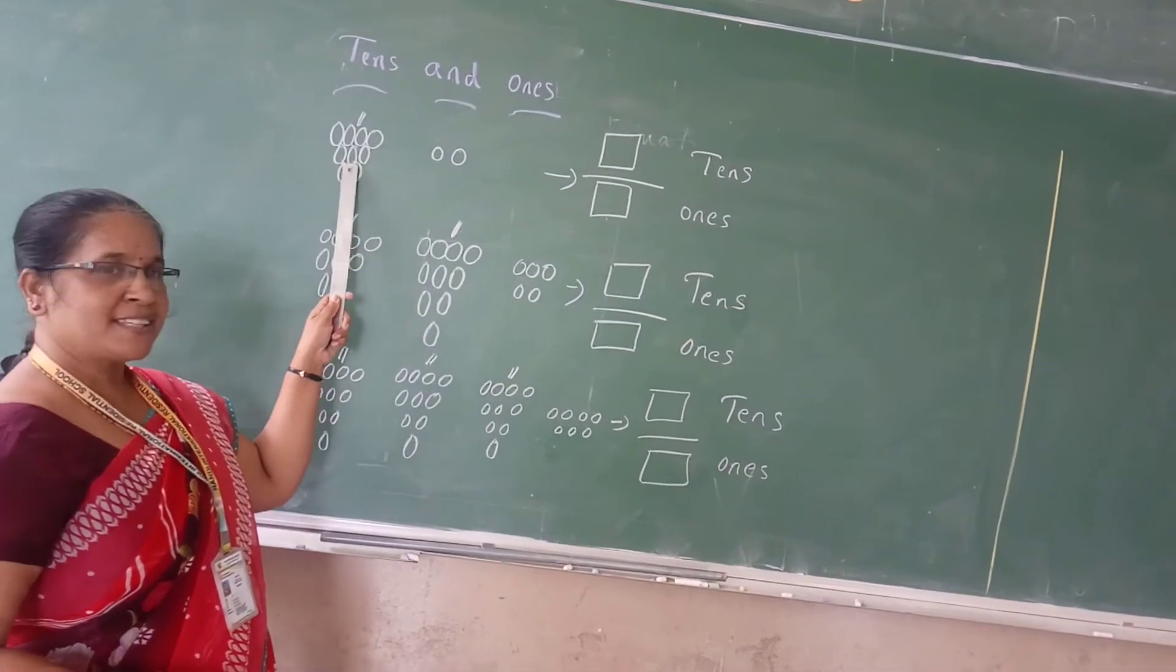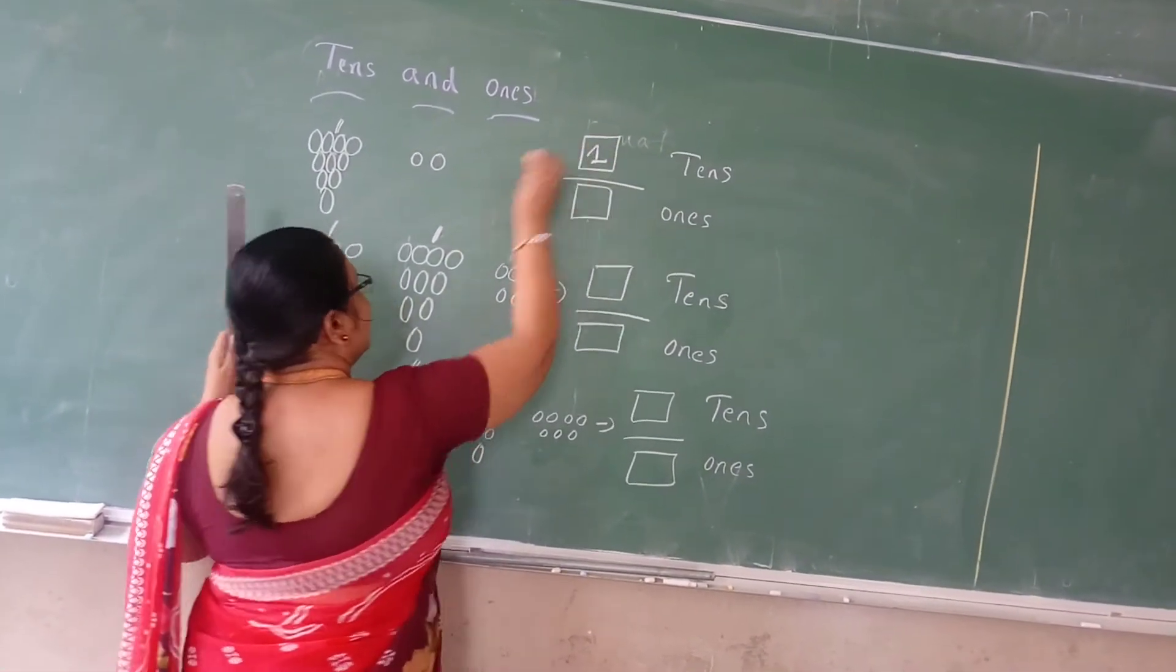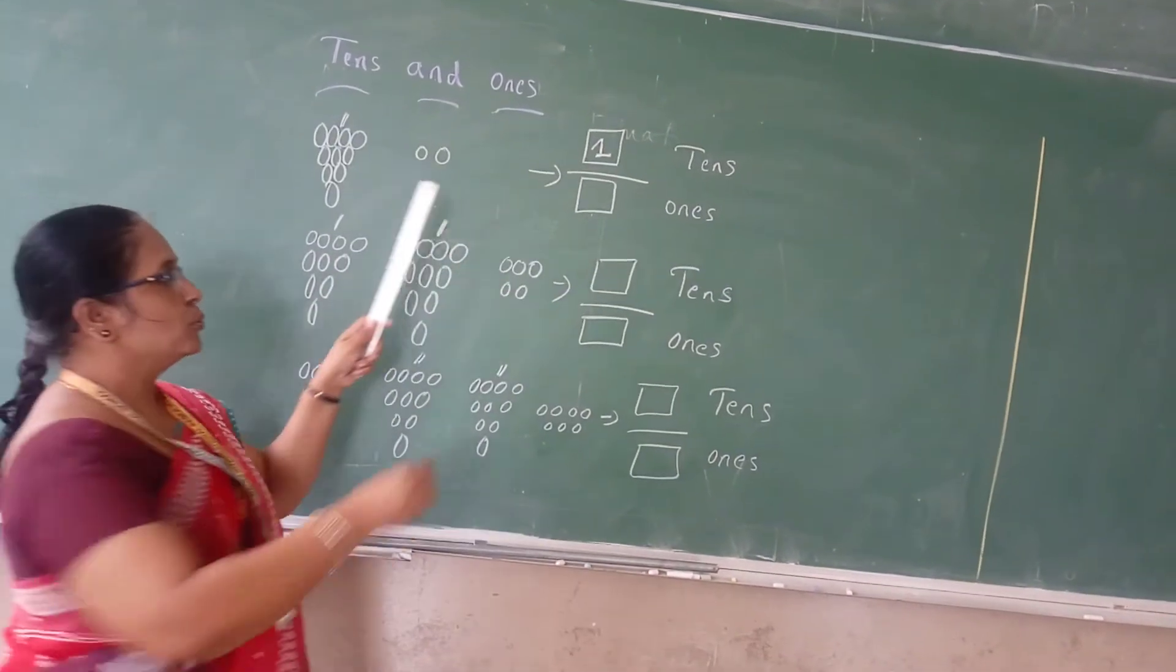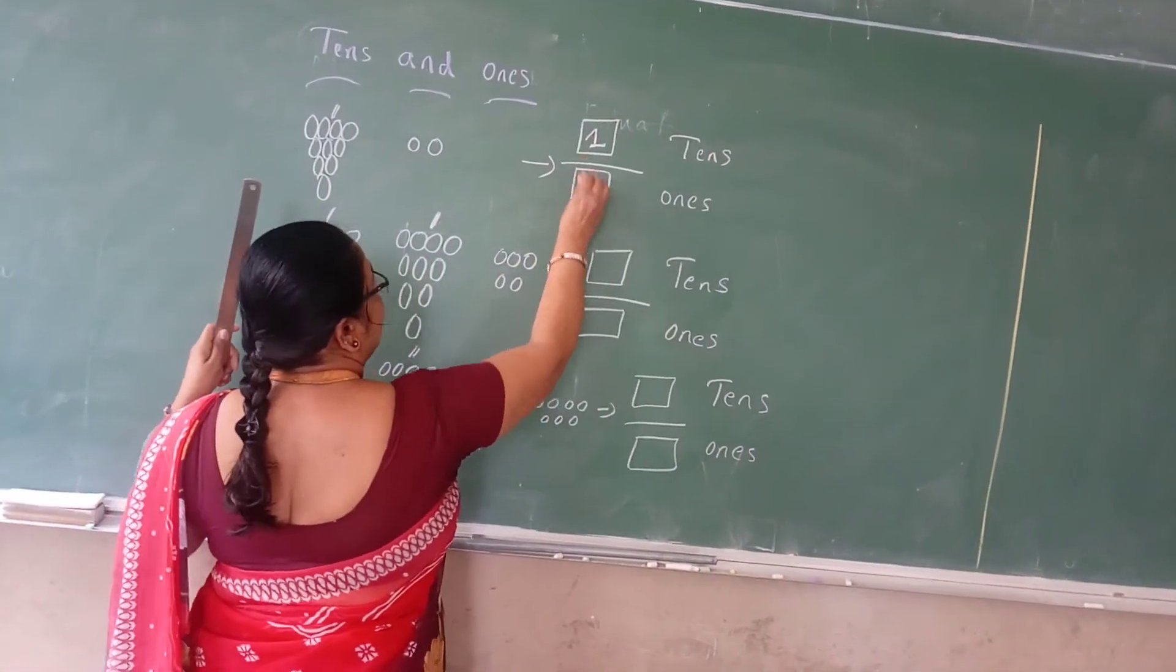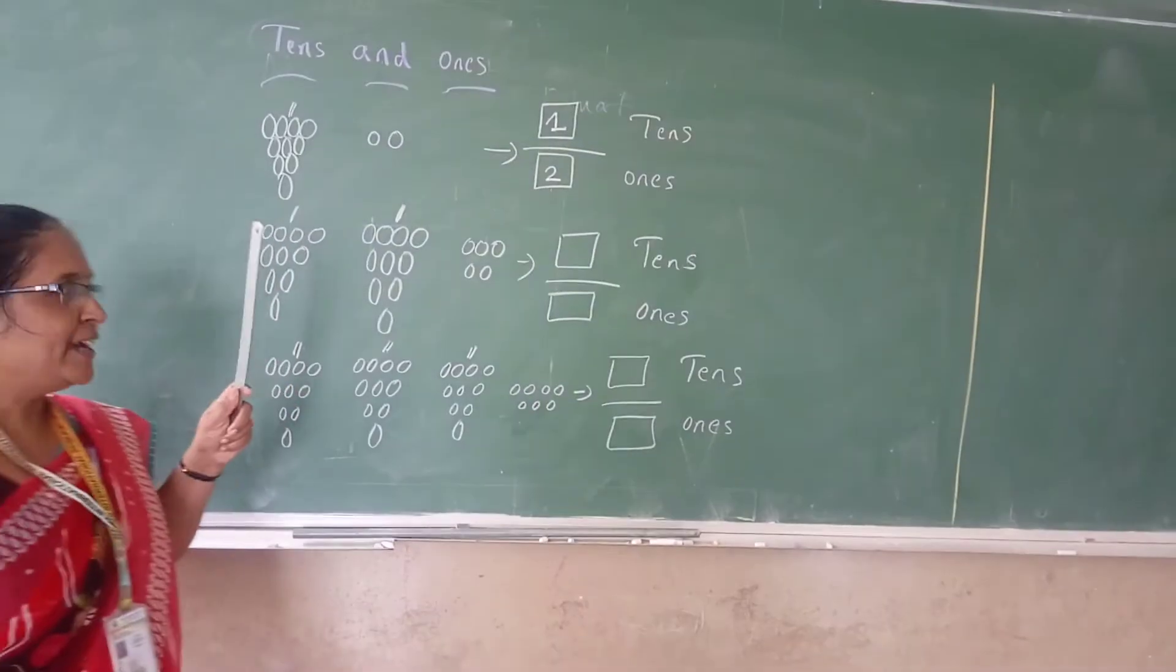See here, what is this? 1, 1. Okay, then extra how many are there? 2. Then 1 ten and 2 ones. Okay, next.